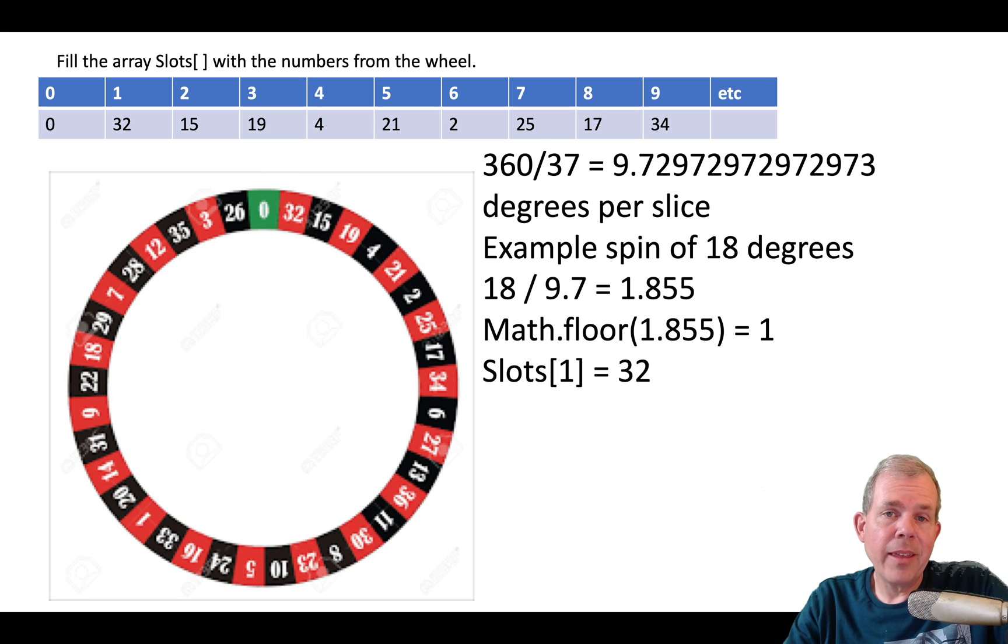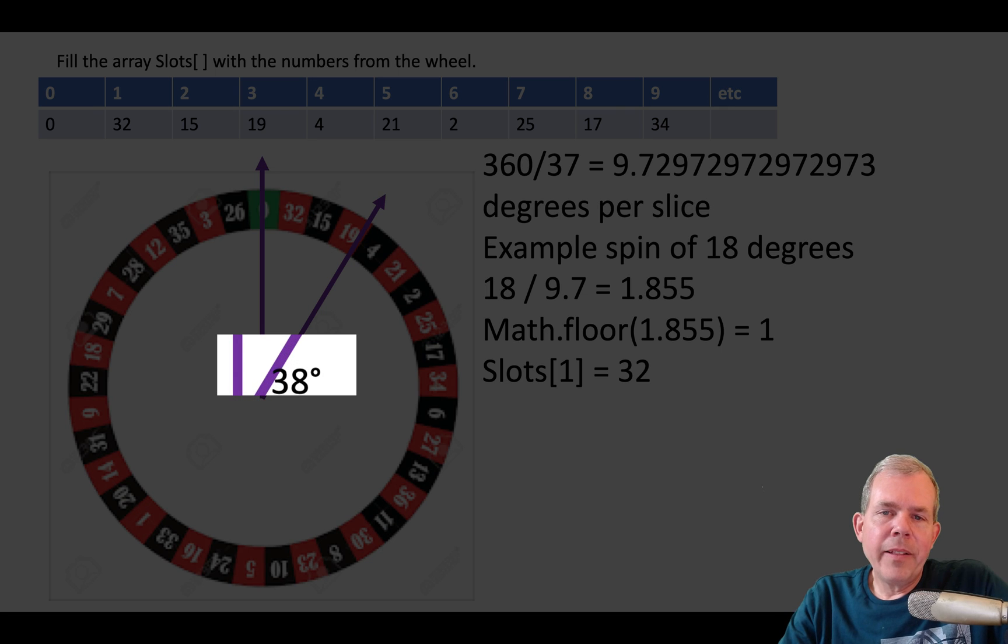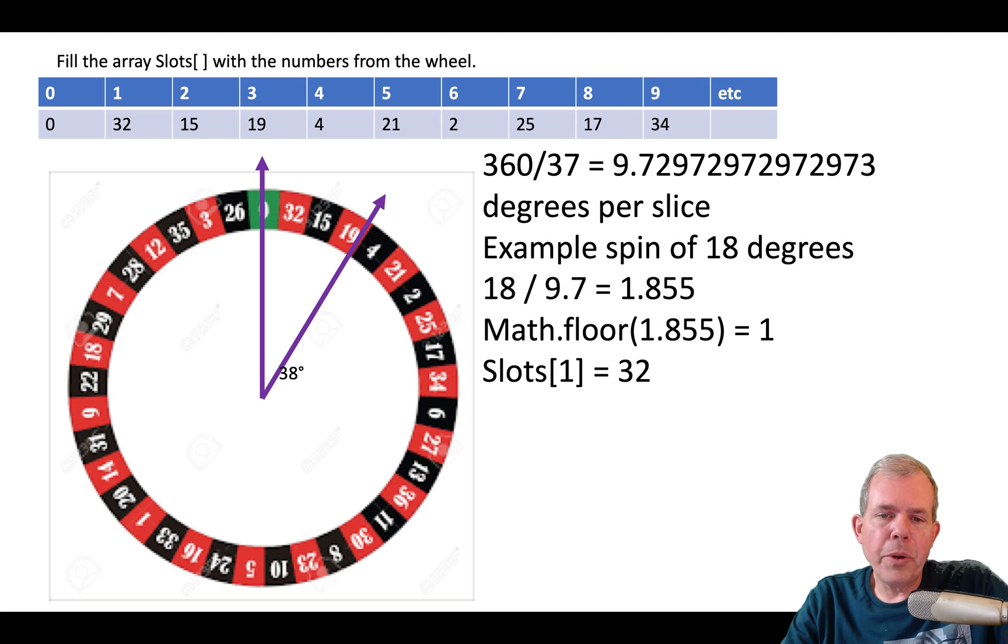Okay, so that's a lot of math. As a human being looking at the wheel, it's pretty obvious where the number stopped. Let's do another example. Let's take an angle, let's say 38. I'll just take another random number. So 38.